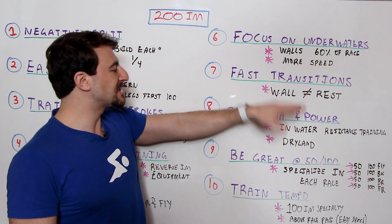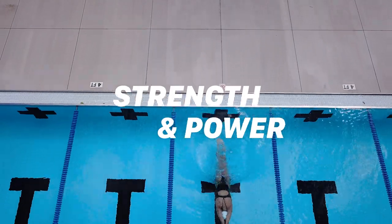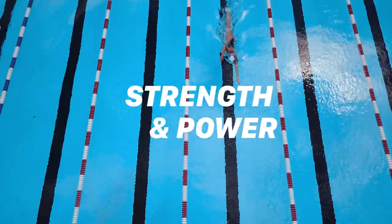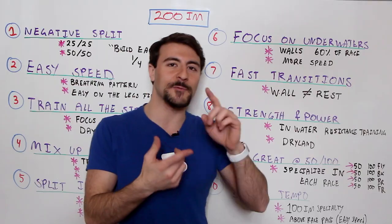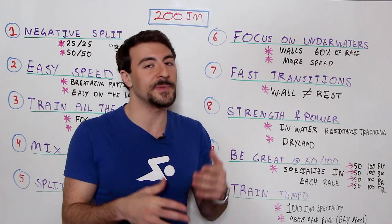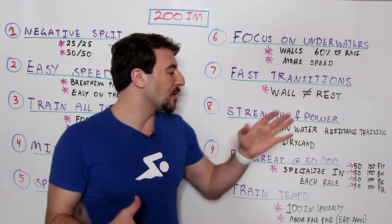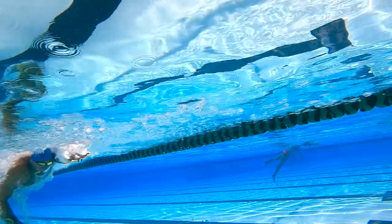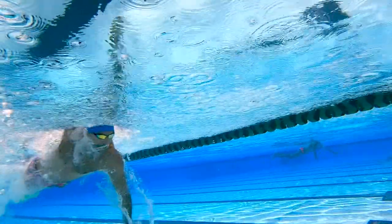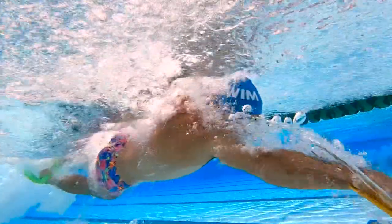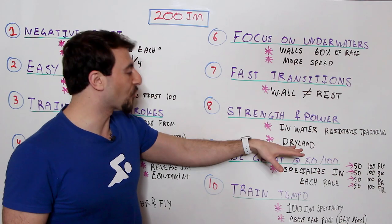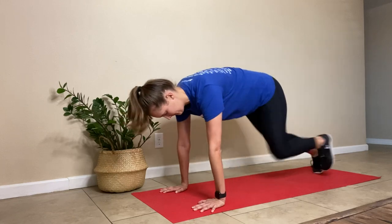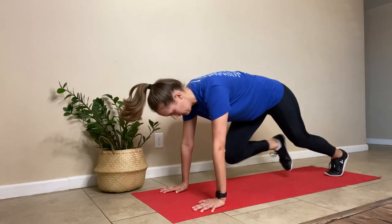Tip eight: strength and power. For events 200 and under, you need power. Train resistance in the water using paddles, fins, resistance cords, or parachutes to build stroke strength so you can power through the water. Dryland training also helps develop strength you can apply in the water.